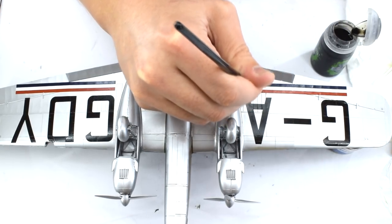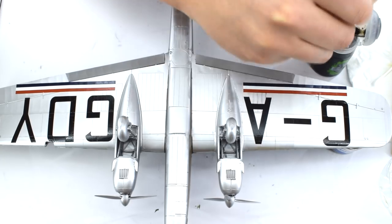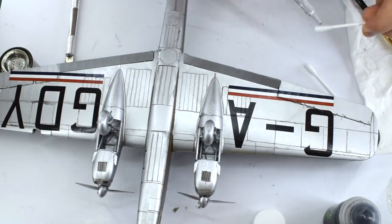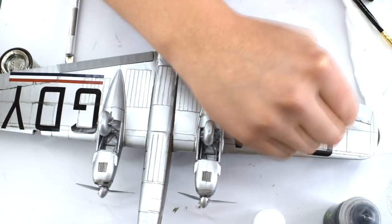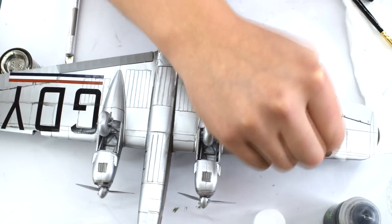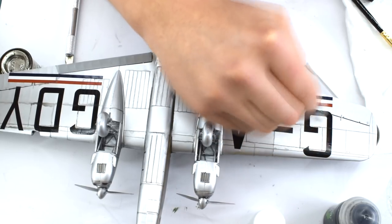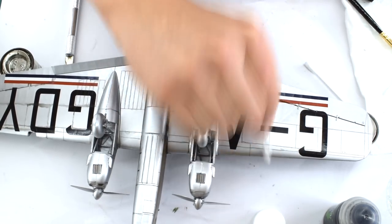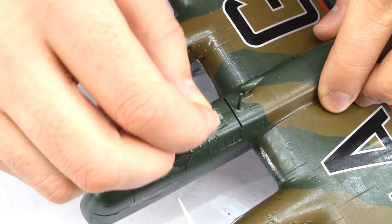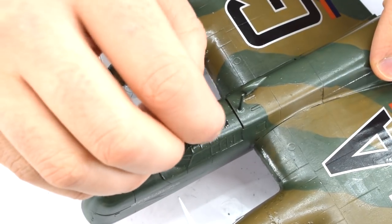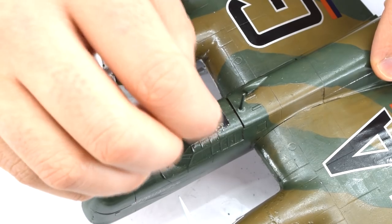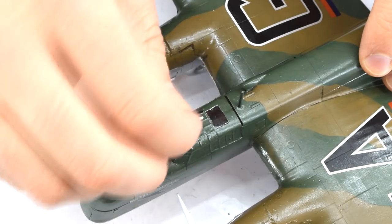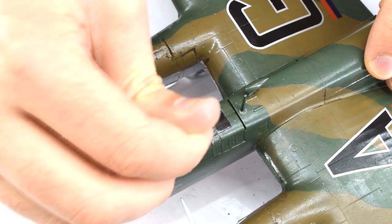The excess wash was then removed from the model using a cotton bud soaked in acrylic thinners. Brushing in the direction of the airflow, you can get quite realistic stains, along with the recessed details retaining the wash, and the raised surfaces having it removed. I used an excess piece of sprue, which had a pointed end, to gently scrape the liquid mask away from the various windows on the model. This seemed to work reasonably well, but I did notice a little bit of peeling of the paint in a few places, which I ended up having to touch up after.